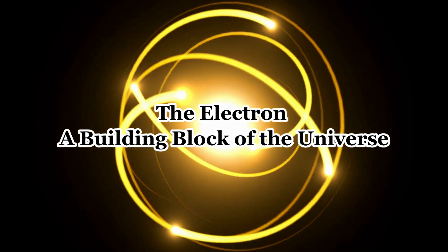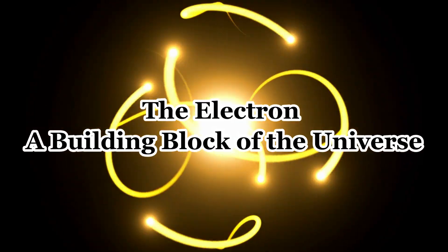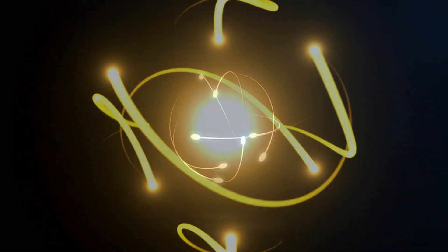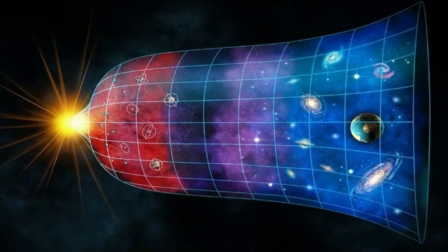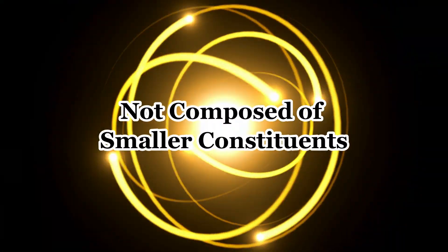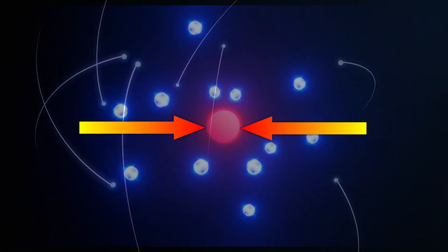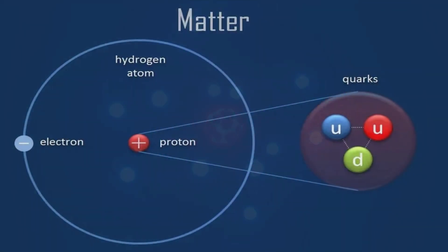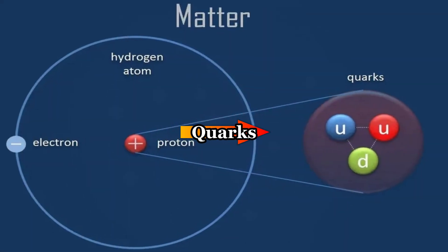The electron, a building block of the universe. Electrons are among the fundamental particles of the universe, meaning they are not composed of smaller constituents. This is in contrast to protons and neutrons, which are made up of quarks.